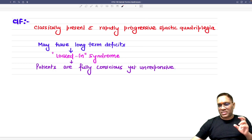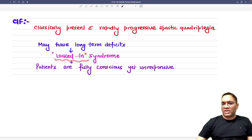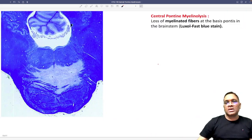So remember, progressive spastic quadriplegia, and that can be fatal also for this patient. Long term sequelae is locked-in syndrome because they will be fully conscious but they will not be responding.